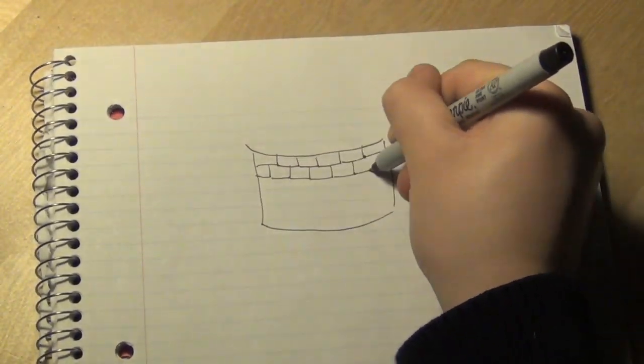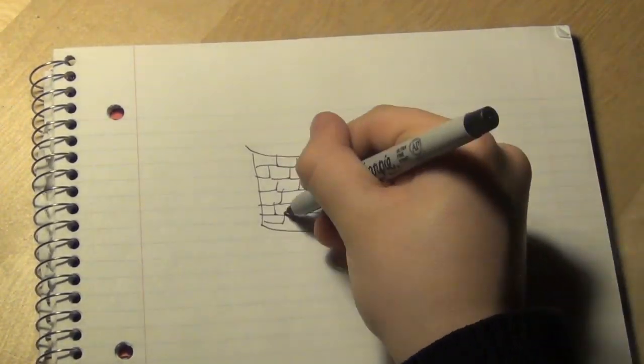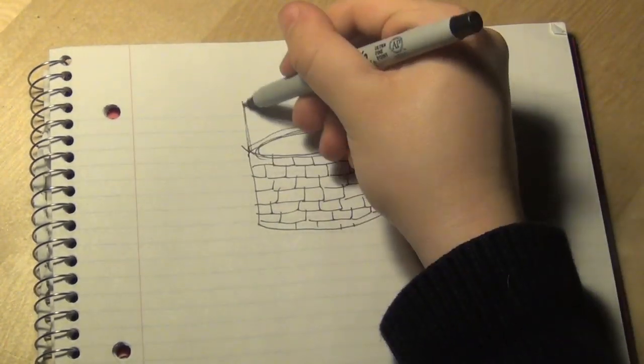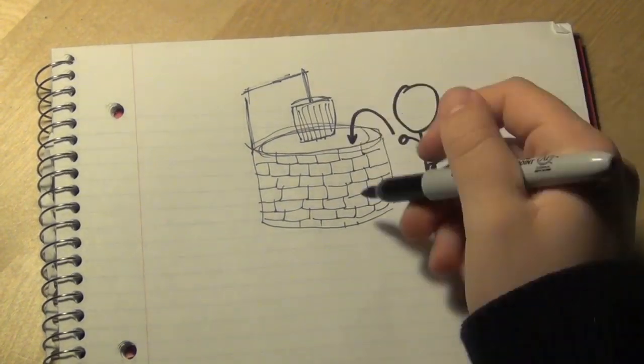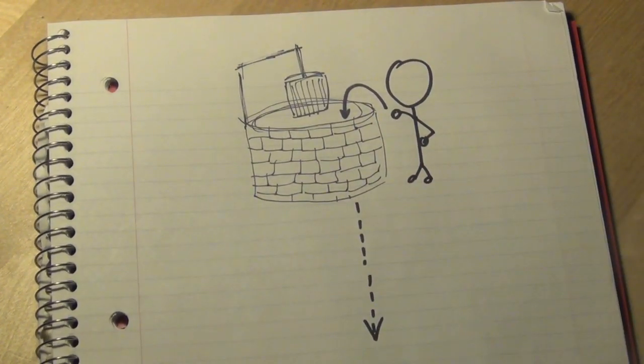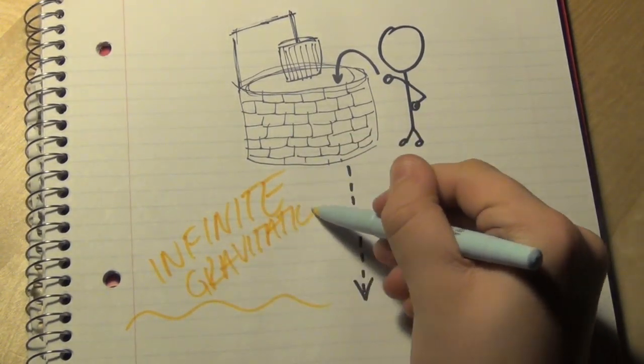Remember the gravitational well I talked about before? Well, imagine making a well that has no end. You could throw a rock down it or roll a marble into it, but it would never hit something that could be considered the definitive ground level. That would be considered an infinite gravitational well, which is what a black hole creates.